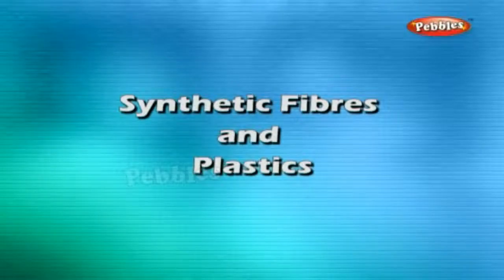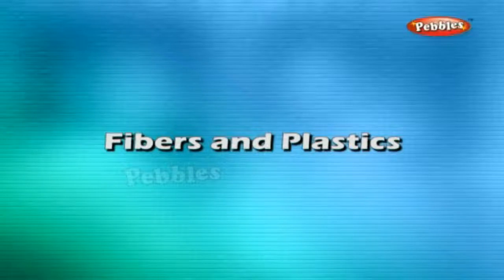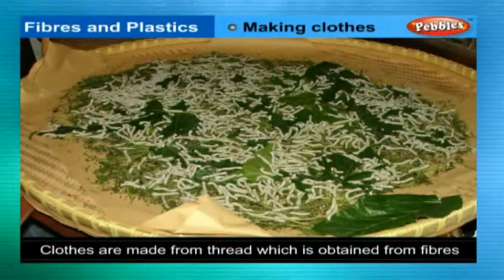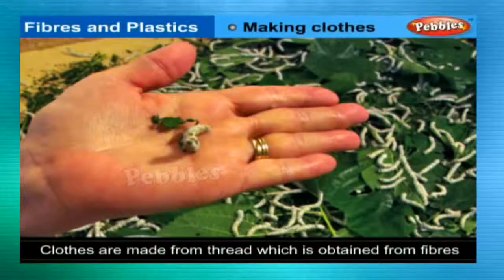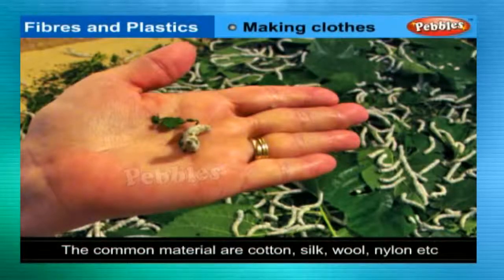Synthetic Fibres and Plastics. Clothes are made from thread, which is obtained from natural or artificial fibres. The common materials are cotton, silk, wool, nylon, and other synthetic artificial fibres.